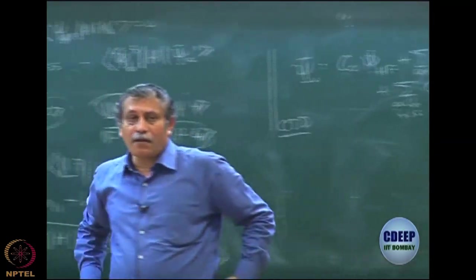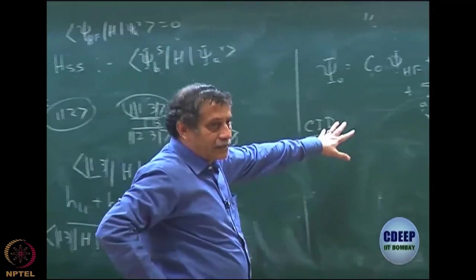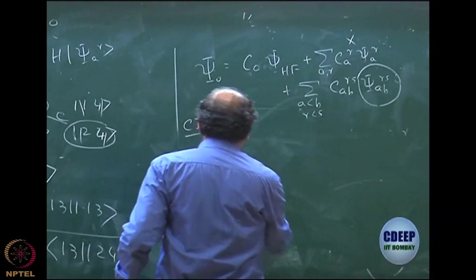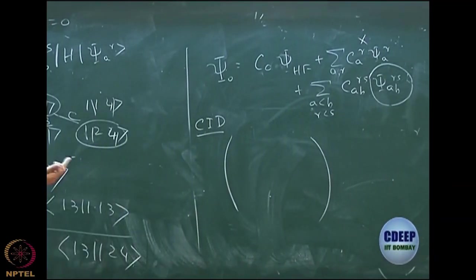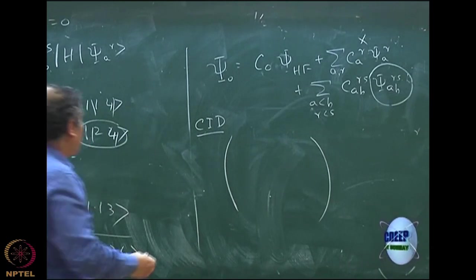I have Hartree-Fock and doubly excited determinants. What will be the structure of the matrix now? I can directly write, again I do not have to derive this. I can do the method of projection and keep deriving similarly.